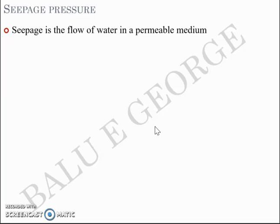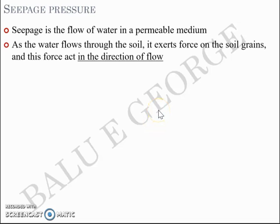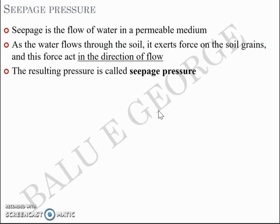Seepage pressure is a pressure offered by flowing water on soil particles. In geotechnical engineering, as water flows through the soil it exerts a force on the soil grains, and this force acts in the direction of flow. The resulting pressure is called seepage pressure.